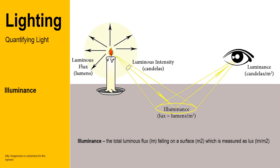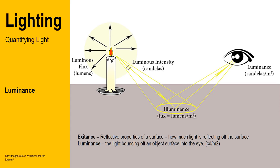The perception of light depends in part on the properties of the surface that the light falls on. A white shiny surface will reflect more light than a matte black rough surface.